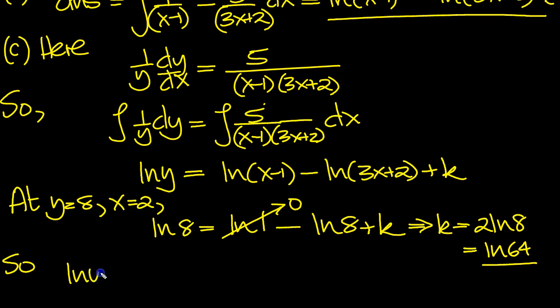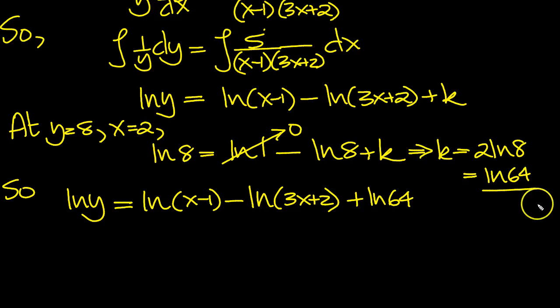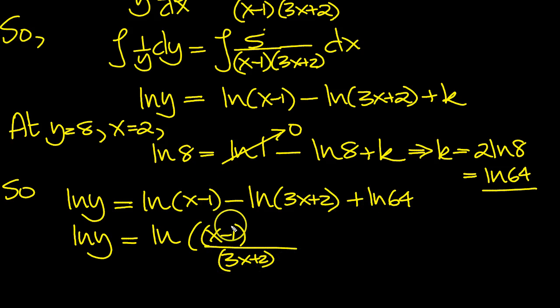So we get this then. ln y is equal to ln x minus 1 minus ln 3x plus 2 plus ln of 64. Now we can write it in the form y equals. Let's just tidy these logs up, collect them together. So log y is equal to, now the log of the right-hand side minus you divide, so it's going to be x minus 1 over 3x plus 2 plus you times, so that'll be times 64. So that's what we've got then. So that implies y is equal to, so this log of this is equal to log of that, so the values are equal. So it's 64 x minus 1 all over 3x plus 2.